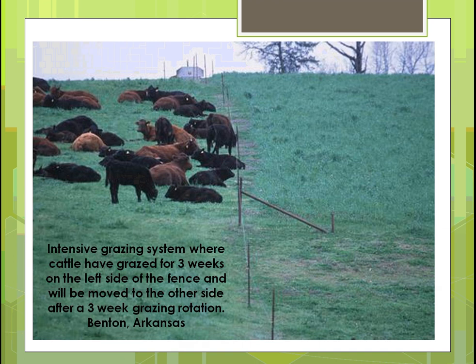Here's an example using grazing to provide fertilizer from animal waste. In an intensive grazing system, cattle have been on the left side of the fence for about three weeks and have eaten most of the grass down. You move them to the other side once it's too low — you don't want them to get all the way to the ground. So you're moving the fertilizer, not getting too much in one area, and it works out beautifully.